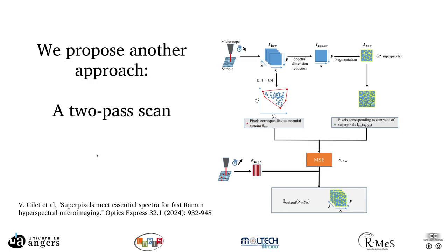That's why we propose another approach, a two-pass scan based on the assumption of essential information. The sample is scanned at low SNR, so quickly, and from this scan you look for the essential information in the Fourier domain. From there you only scan the representative spectra at high SNR to reconstruct the entire image.